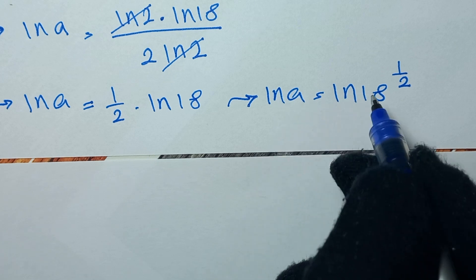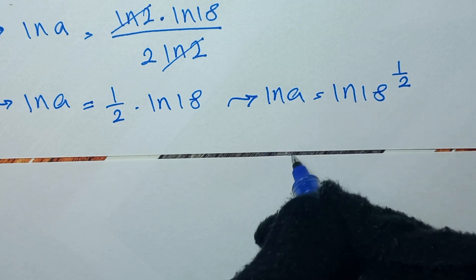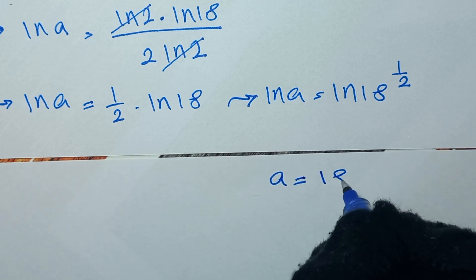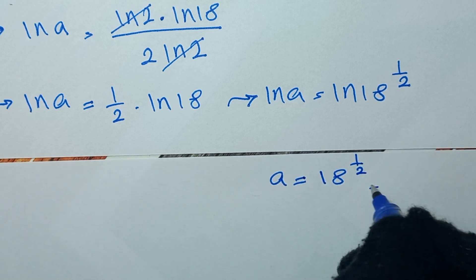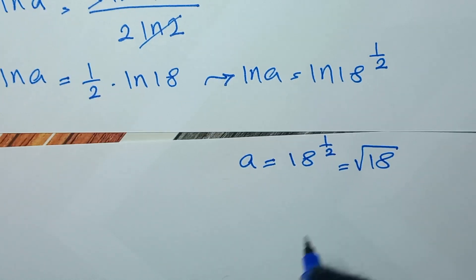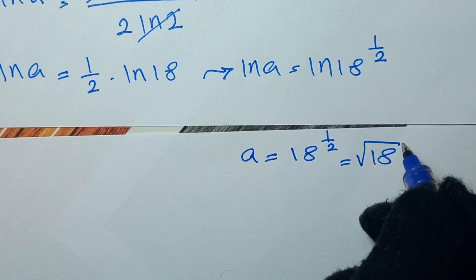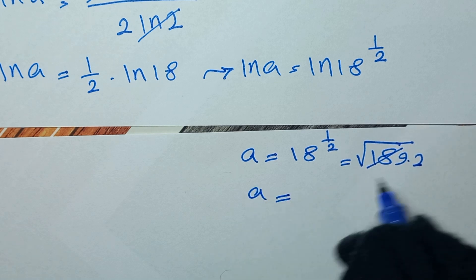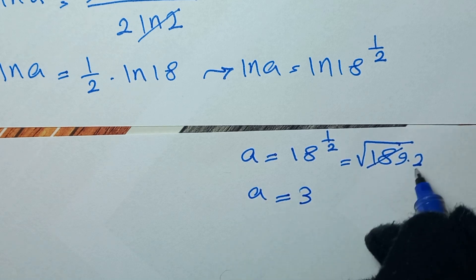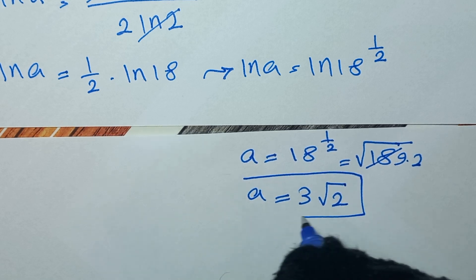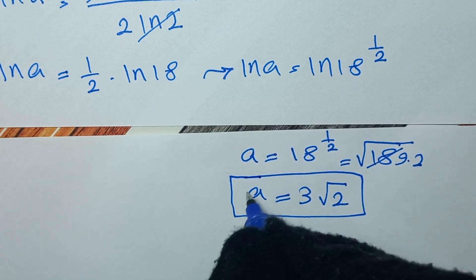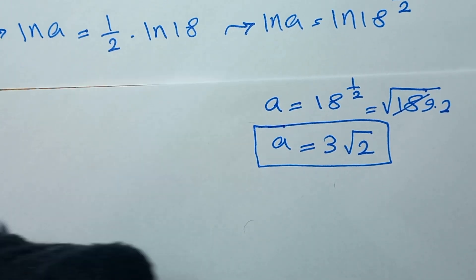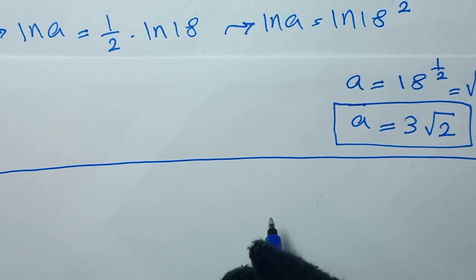By comparing both sides, a is equal to 18 to the power of one-half. We can write 18 as 9 times 2, so a equals the square root of 9 times 2, which is 3 times the square root of 2. So the value of a is 3√2. Now for the second method.